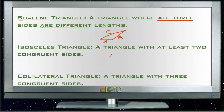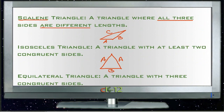An isosceles triangle is a triangle where two sides are the same. The other side may or may not be the same, but at least two sides are the same. An isosceles triangle can actually be the same as the equiangular triangle, where all three sides are equal.